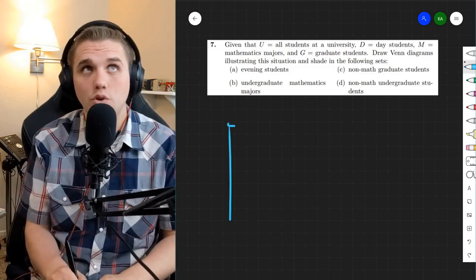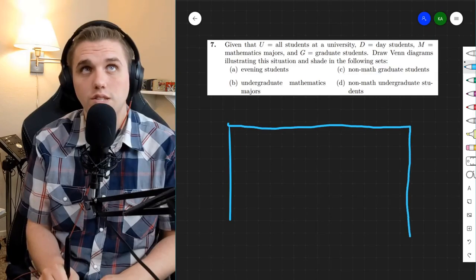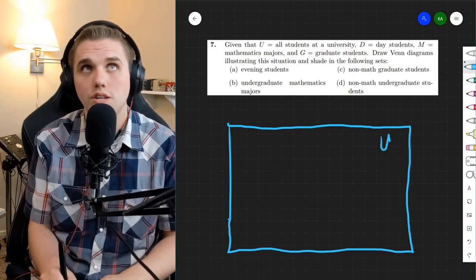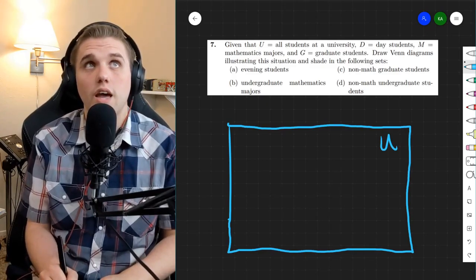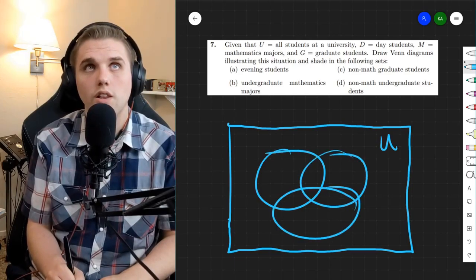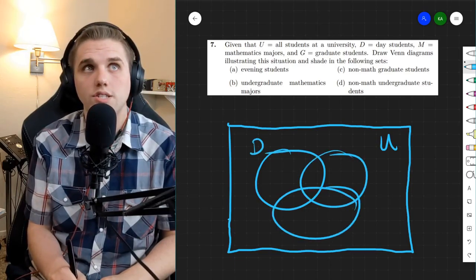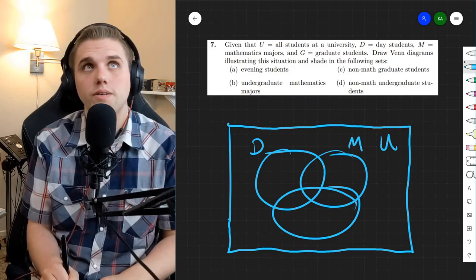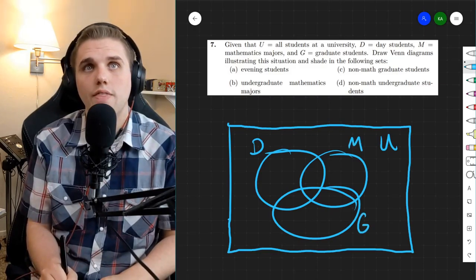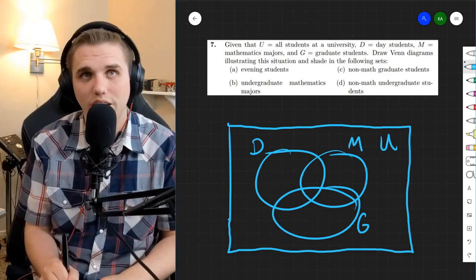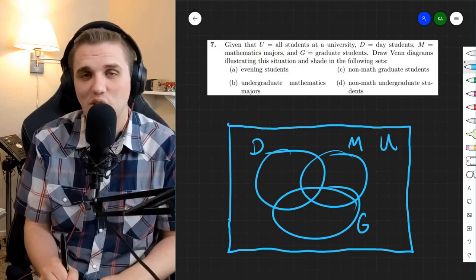So according to the setup, we have this universe of all these students at a university. So this box represents all students at a university. And there are three different types of students, it looks like: day students, mathematics majors, and graduate students. And then there's everyone else outside of these three things, because not everyone is one of those things in a university, right?